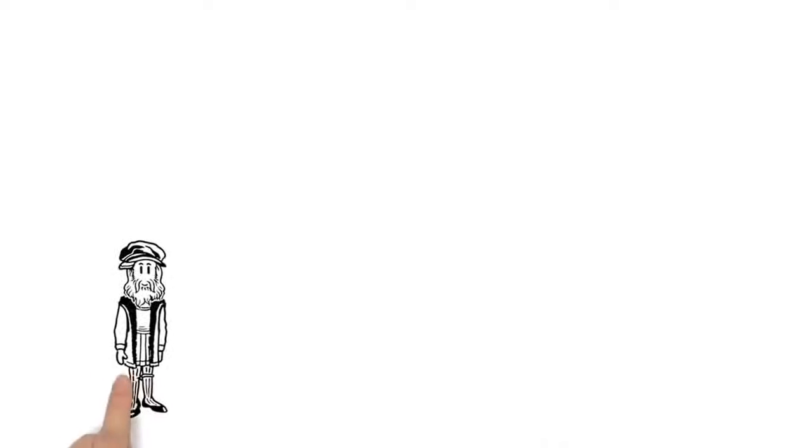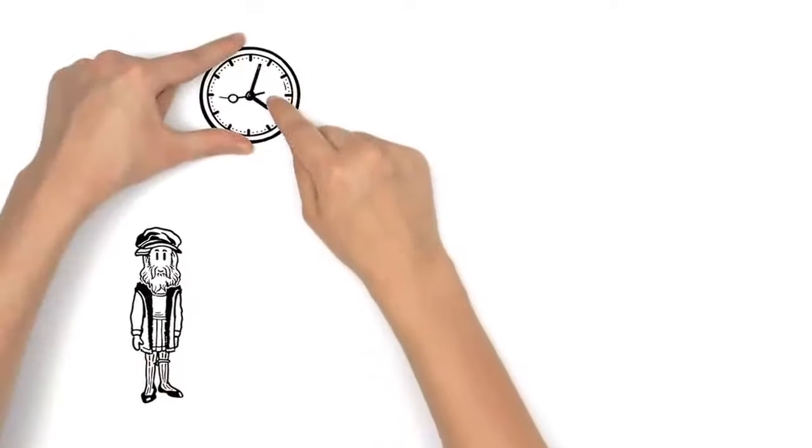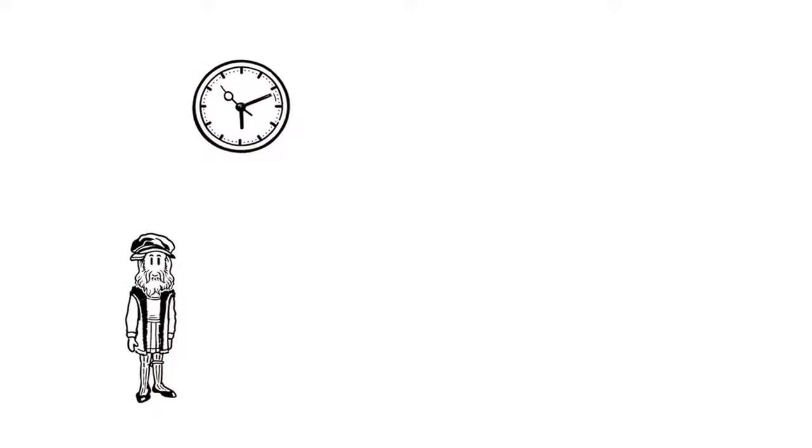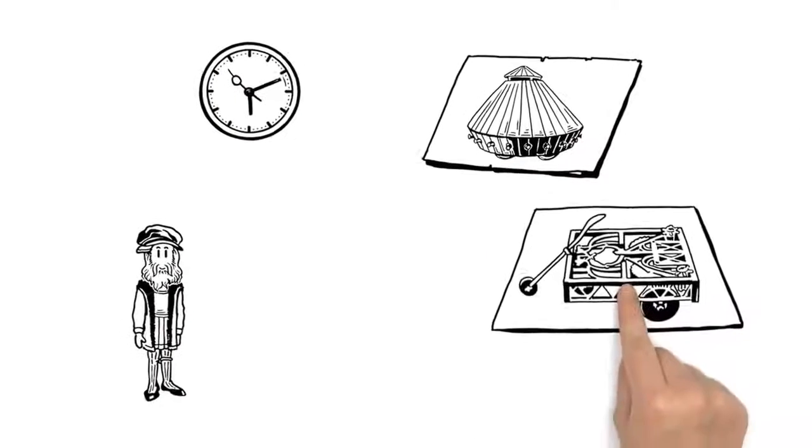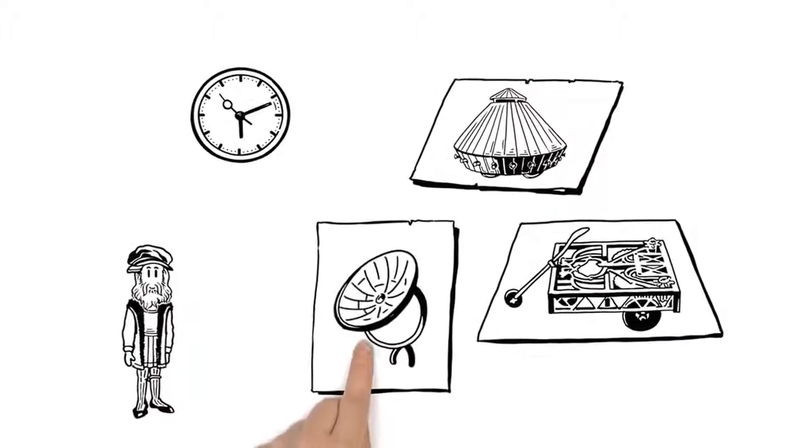As an engineer, Leonardo was centuries ahead of his time. As early as 500 years ago, he designed the first precursors of the tank and the automobile, and even a solar reflector.